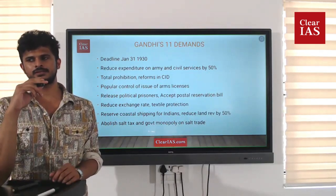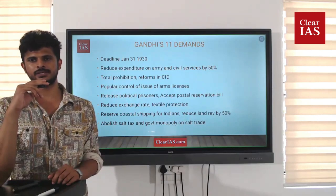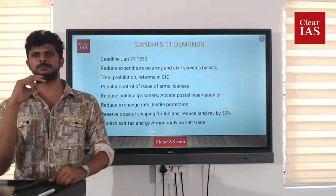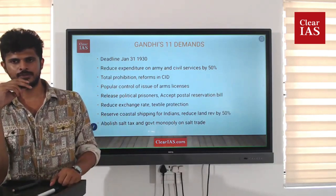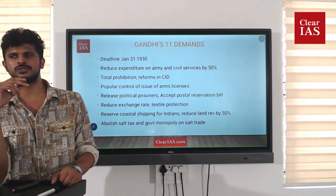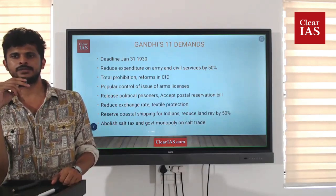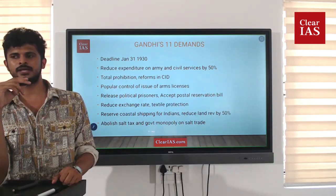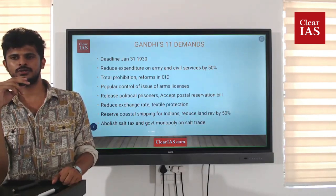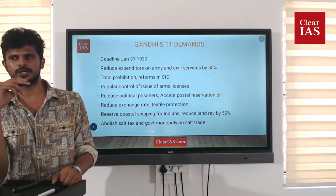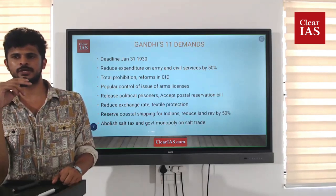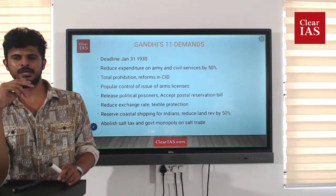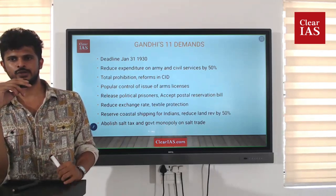By then, salt tax was a major concern because salt was used by all sections of society and was a major part of every food item in India. Gandhiji demanded the British abolish the salt tax. Salt trade was under the monopoly of the British government, so he demanded that they abolish this monopoly and allow other companies to participate in the trade, so that the price of salt would decrease. These were the 11 demands made by Gandhiji to the Viceroy.